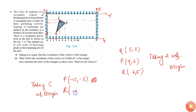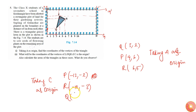Similarly, R will become minus ten comma minus three, and Q will become minus six comma minus seven. Counting from C: minus three, four, five, six, seven — that gives minus six in one direction and minus seven in the other direction.